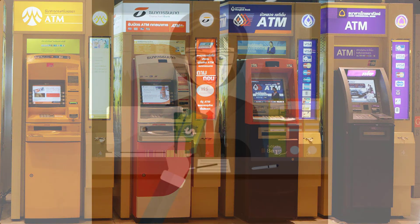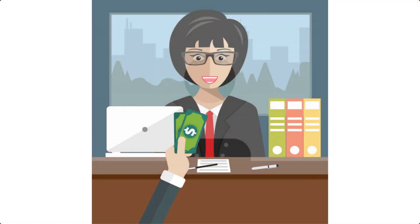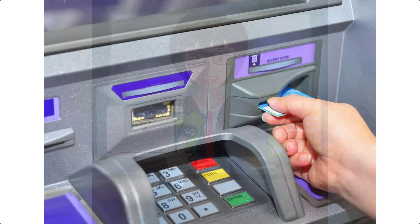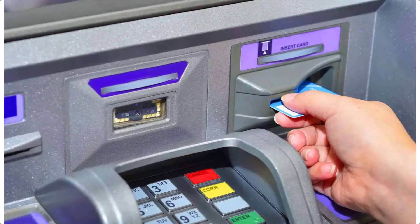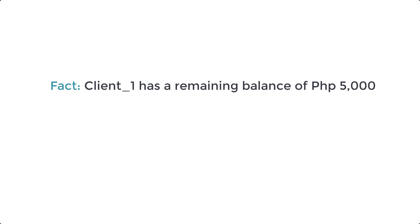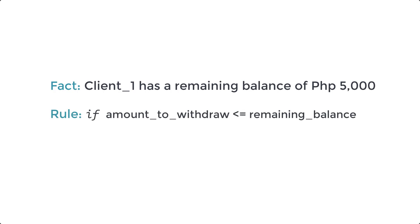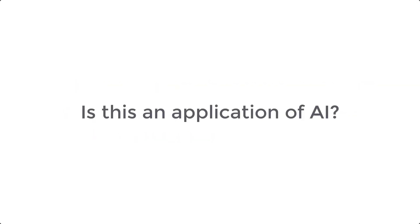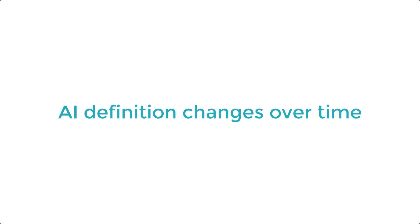The machine performs the action of an expert in a particular domain — say, a bank teller — who would perform accordingly when faced with a client doing banking transactions. For example, in an ATM withdrawal transaction, a fact that a client has a remaining balance of 5,000 is matched to a rule: if a client enters an amount less than or equal to the remaining balance, then dispense the money. But for most of us, we no longer consider this an AI system because there's nothing new to it — and that's the problem with defining artificial intelligence. It's like a moving target; its definition changes over time. Once it has been done, no one calls it AI anymore.